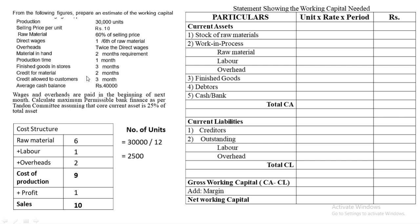Now let us calculate current assets. Stock of Raw Material: Units = 2,500; Rate = ₹6 (raw material rate); Period = 2 months (material in hand). Applying the formula: 2,500 × 6 × 2 = ₹30,000. That is the value of raw material stock.